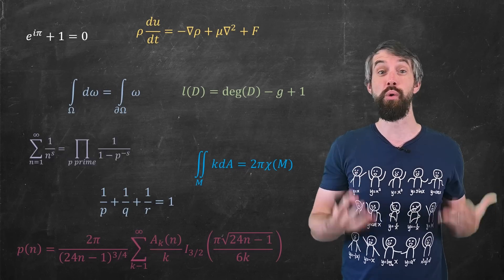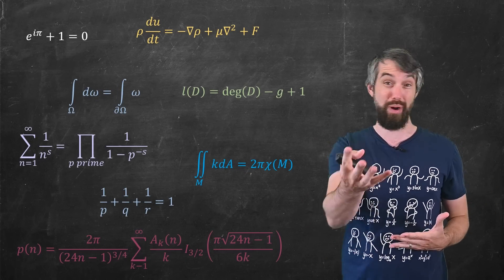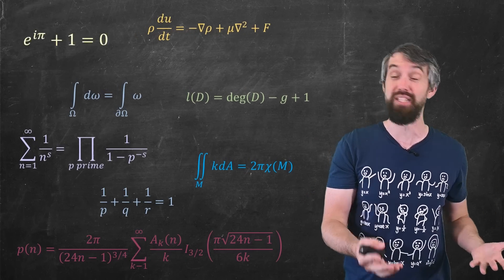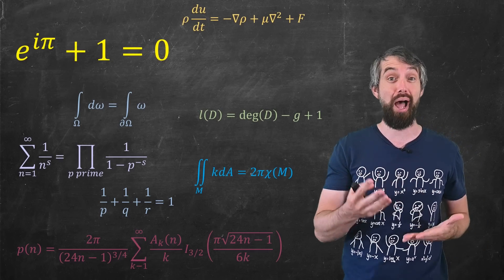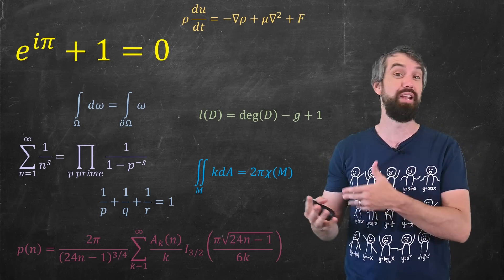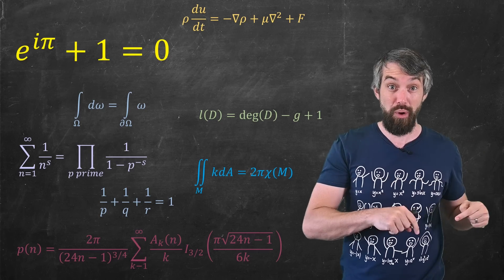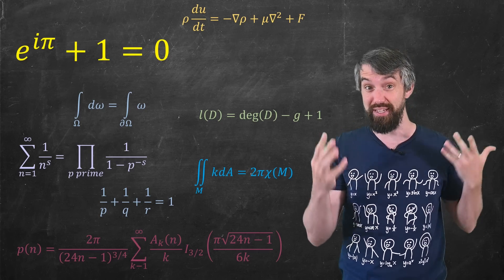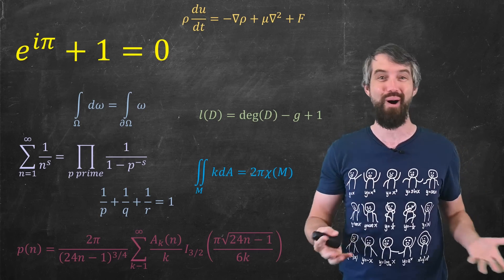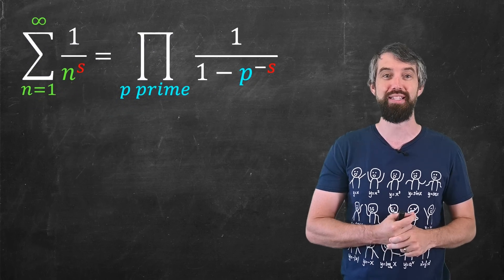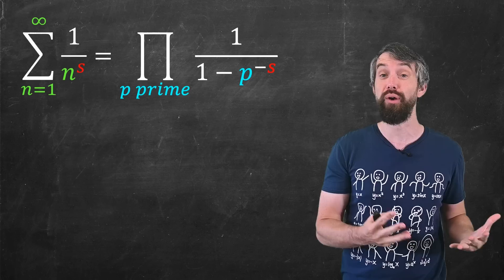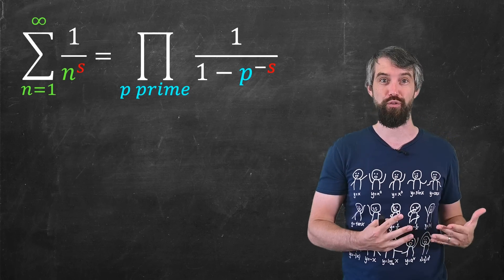There are many beautiful equations within mathematics. Probably the most commonly cited one is Euler's equation, e to the i pi plus 1 equal to 0, that combines five of the special numbers in mathematics. But in this video, I want to make a case for a different equation to be on any short list for the most beautiful equation in mathematics. This one is also due to Euler. It is the Euler product formula.